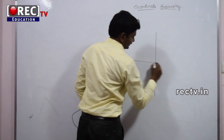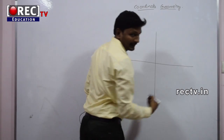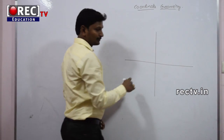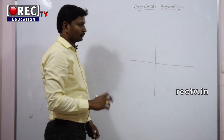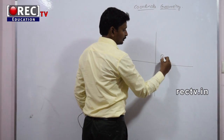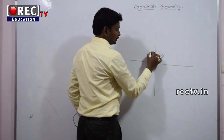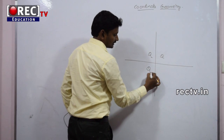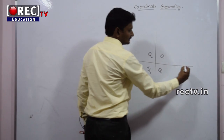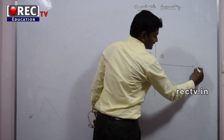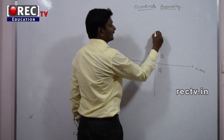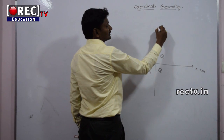First, this is the coordinate axis. The coordinate axis divides any plane into 4 parts. The first one is Q1, next Q2, this is Q3, and next Q4. The horizontal line represents the X axis and the vertical line represents the Y axis.